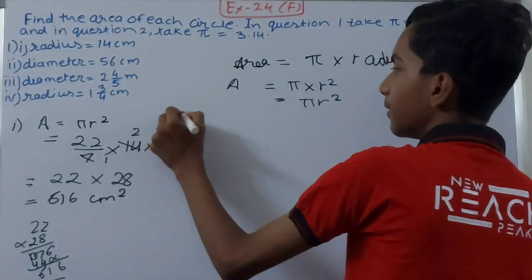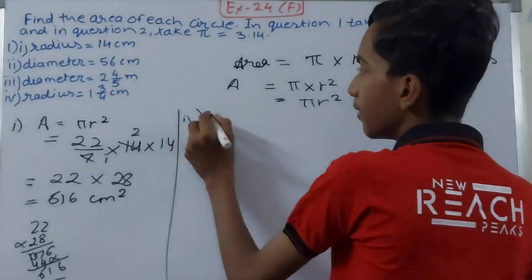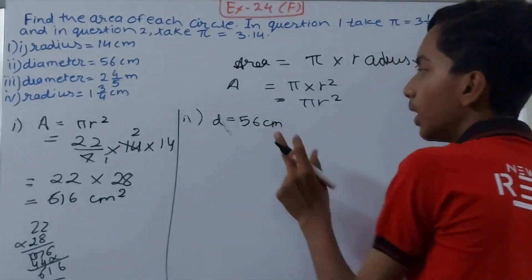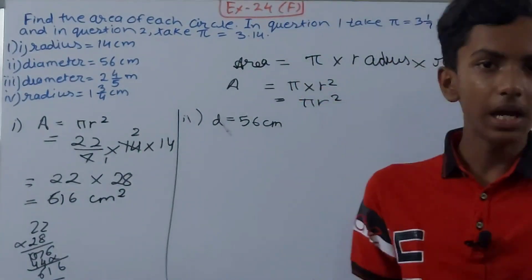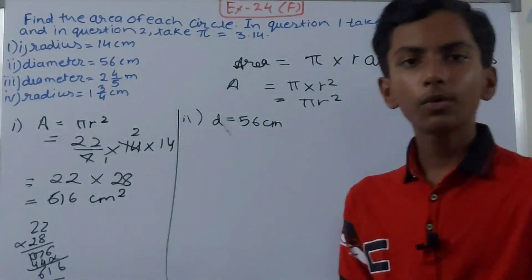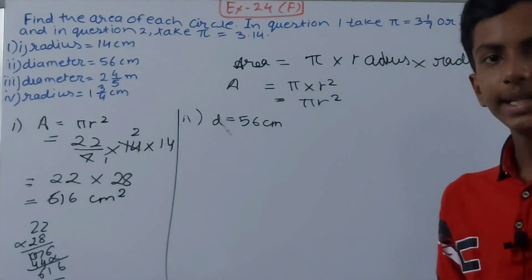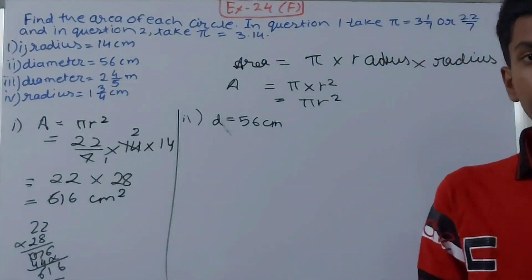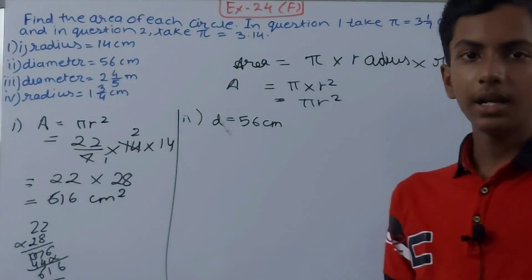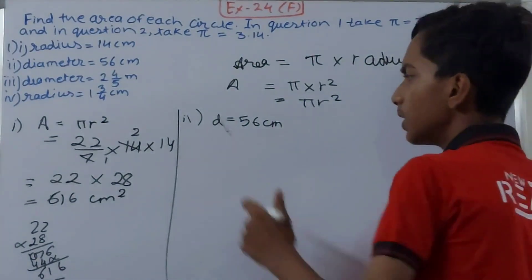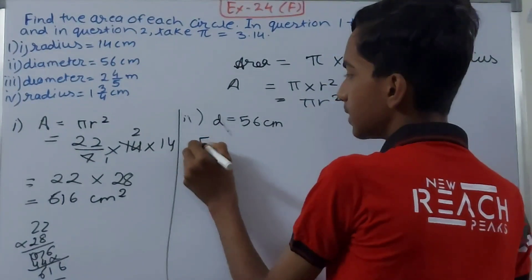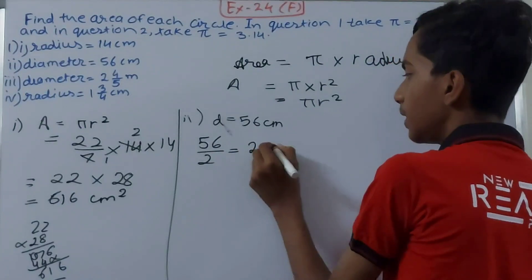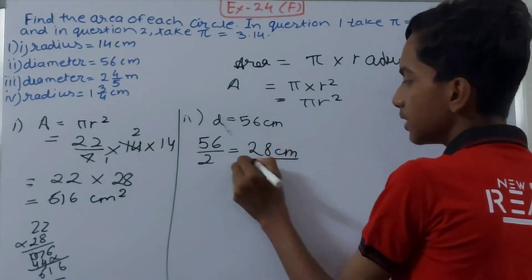Second, we've got the diameter, 56 centimeters. Here we will convert diameter into radius. This is very important because in the question we have radius into radius. First we need to convert the diameter. There is a formula with the diameter also, but that will become a time-taking process. So 56 upon 2, this will give us the radius, that will be 28 centimeters.